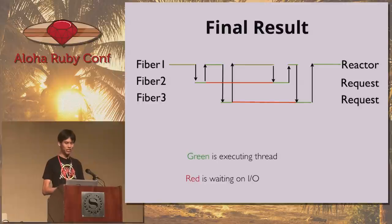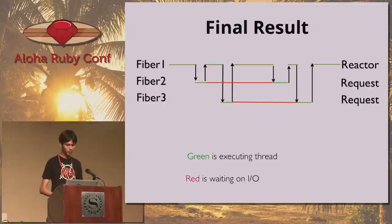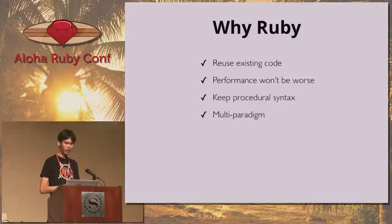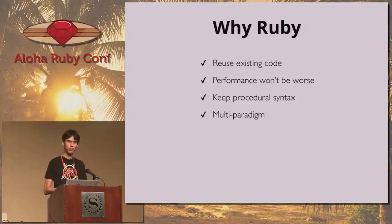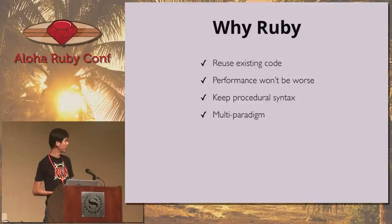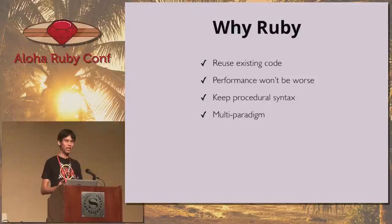After we've tweaked our libraries to be reactor-aware, we get an execution pattern much more similar to what we see in Node. So why and when should you use Ruby? If you spend time adding evented I/O to your Rails app, you'll see clear benefits: you can reuse your existing code, performance won't be worse than when you started, you keep that same readable Ruby code, and it's multi-paradigm so you can pick and choose what things you want to optimize with what style of programming.